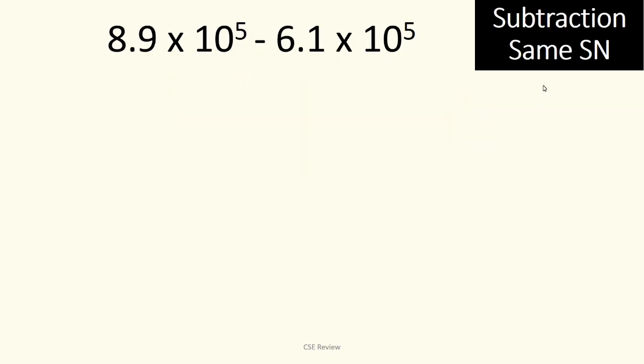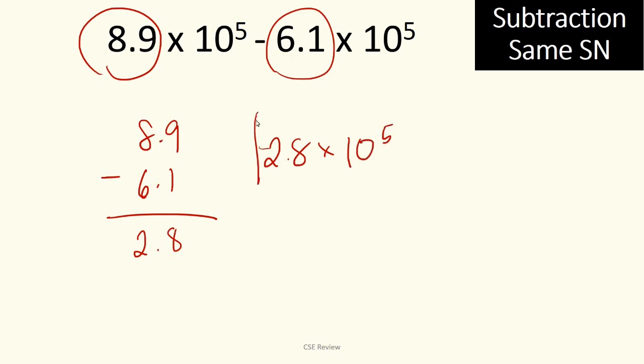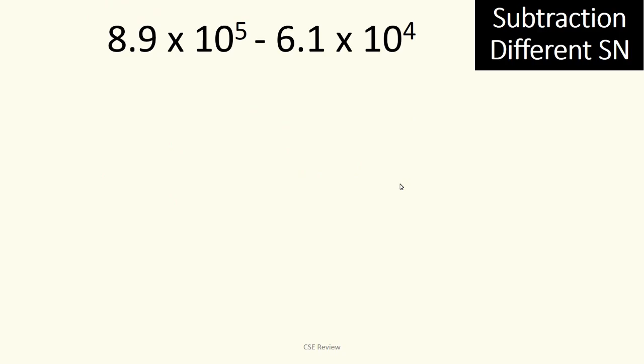So, we'll subtract this time when the scientific notation is the same. Again, same rule. Just subtract and then copy. Subtract these two first parts, then copy their last name. So, it's going to give you 8.9 minus 6.1, that is going to be 2.8. So, 2.8 times 10 to the fifth. That is your answer. Again, mas madali kung pareho ng scientific notation.